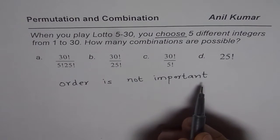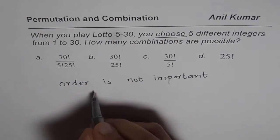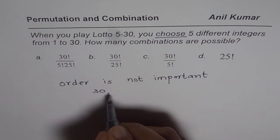Since order is not important, then the answer is from 30 we are selecting five numbers, so it is 30C5.